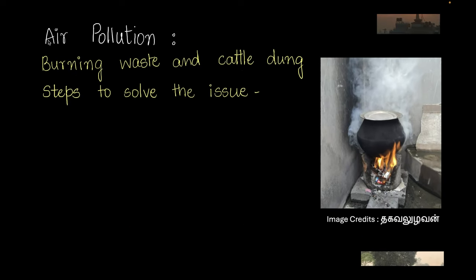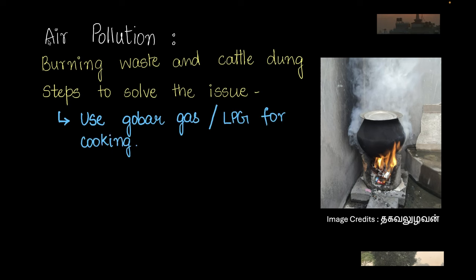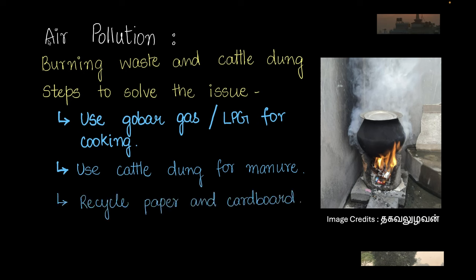In villages, a common cause of air pollution is burning waste and cattle dung for cooking and domestic purposes. While economical, it causes a lot of harm to the atmosphere. Alternatives include using LPG or gobar gas for cooking, using dung as manure, and recycling paper and cardboard more effectively.